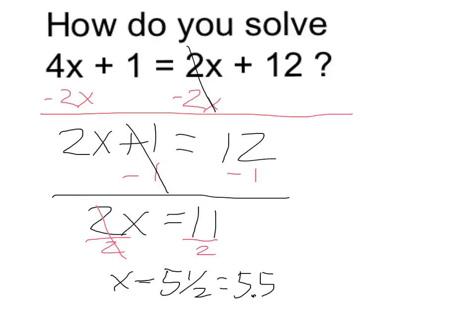So again, I started by getting all of my x's on the same side by canceling them on one side, and then to get the x by itself, I subtracted 1, and finally divided by 2.